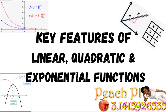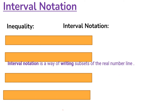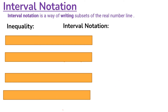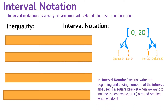Let's get started. First, let's take a look at interval notation. Hopefully you recall what it is, but if not, it is just a way of writing subsets of the real number line. We have an example here of interval notation, looking at these brackets. We write the beginning and ending numbers of the interval, using a square bracket when we want to include that end value, and a round bracket when we don't.